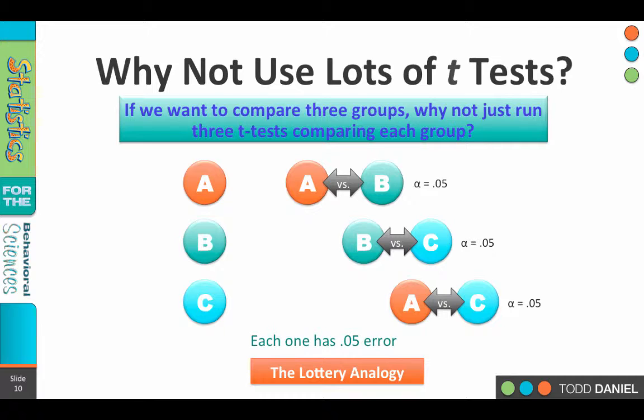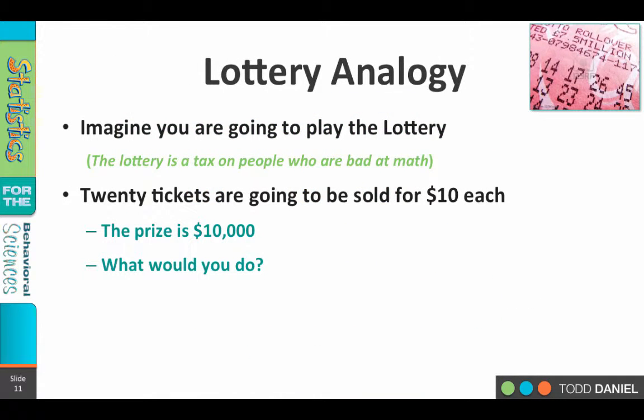Let me explain why this is a problem using a lottery analogy. Imagine that you're going to play the lottery — which I don't particularly recommend because the lottery is a tax on people who are bad at math. I find it a little cynical when states say they're going to have a state lottery and give the money to education, because if the education worked, people wouldn't be playing the lottery. Once you know something about probability, you realize your best bet is to put that money into a savings account. Even if you earned no interest, you'd still have the money you would have spent on lottery tickets.